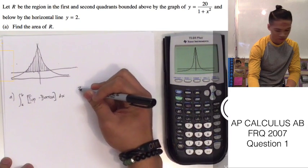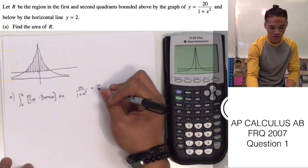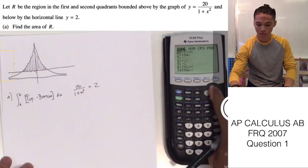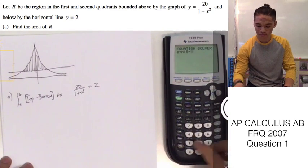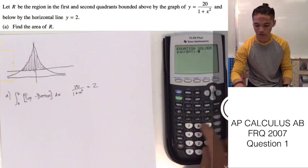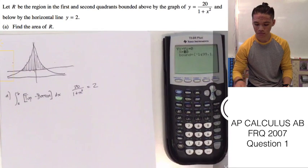So to do that, just set this up over here. 20 over 1 plus x squared equals 2. These are our two functions. We can go to our math, our numeric solver. Plug in our functions, which are represented by y sub 1 and y sub 2. Enter.